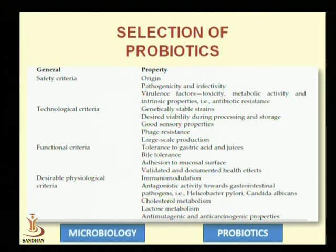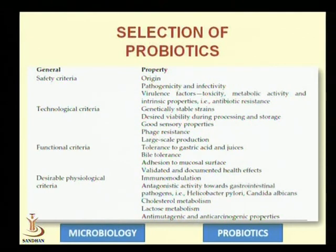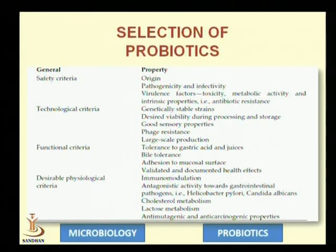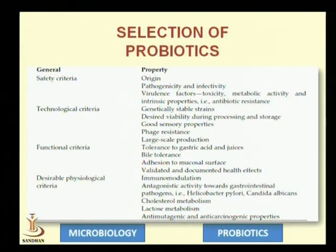Probiotic microorganisms should also show good sensory properties. For functional criteria, the probiotic must be able to pass through the gut, resisting gastric acids down to pH 2, and tolerating bile salts. The microorganism should be able to colonize itself in the epithelial cell.